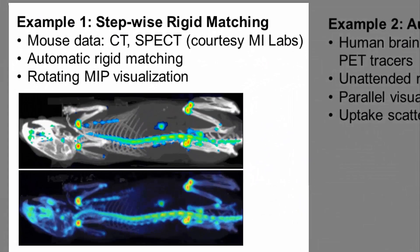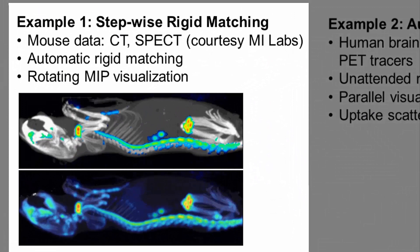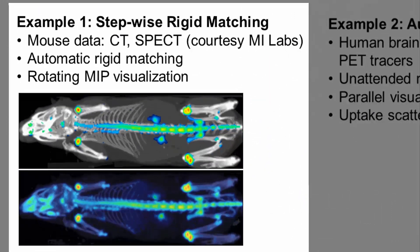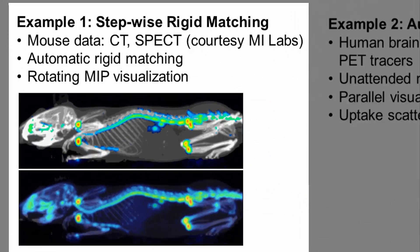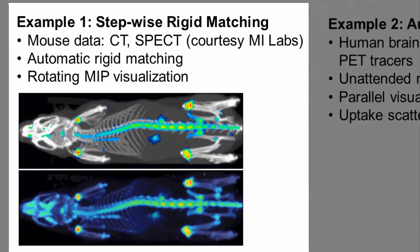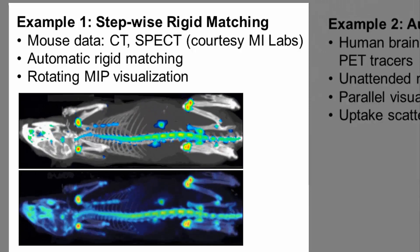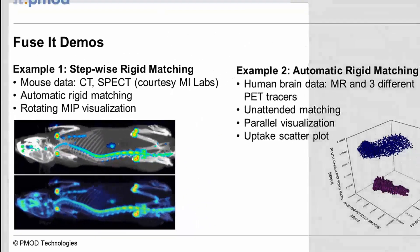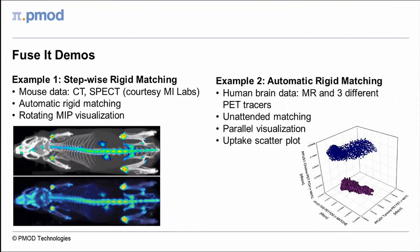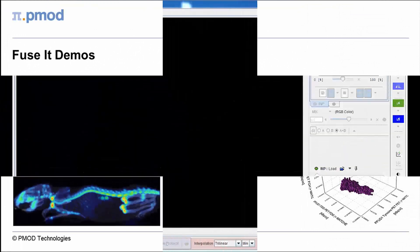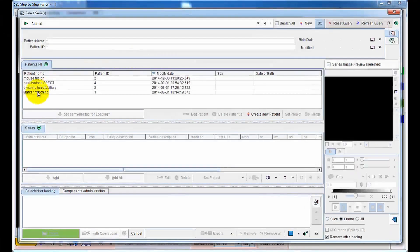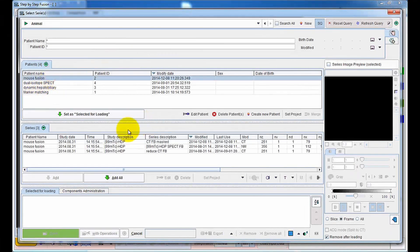The first example illustrates the stepwise registration approach. It uses mouse data sequentially acquired in a combined SPECT CT scanner, so that rigid matching can be applied. Stepwise processing starts with loading the SPECT data.